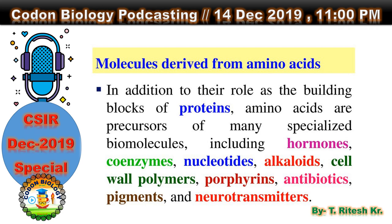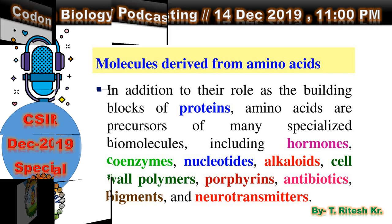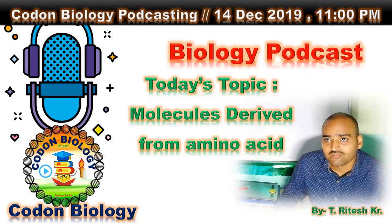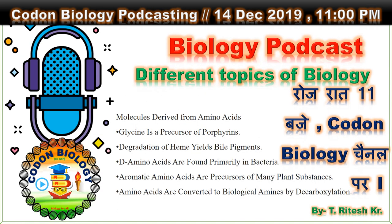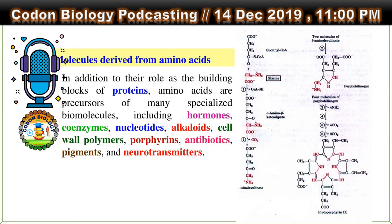Examples of some common molecules derived from amino acids are auxin, catecholamines, GABA, serotonin, histamine, polyamines, nitric oxide, creatine, lignin, porphyrin, and glutathione.